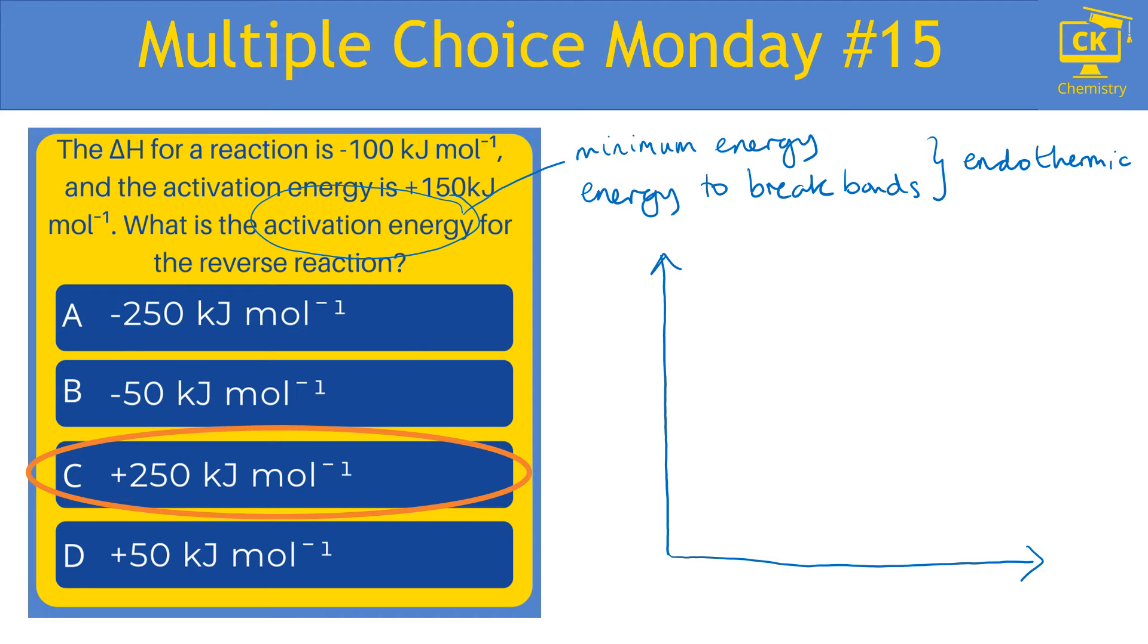So for an exothermic reaction, and we know it's exothermic because it says delta H is minus 100 kilojoules per mole. So I'm going to draw my reactants and my products, and I know that that value there is minus 100. So I'm also given a value for the activation energy. So we're quite used to drawing a profile like this.